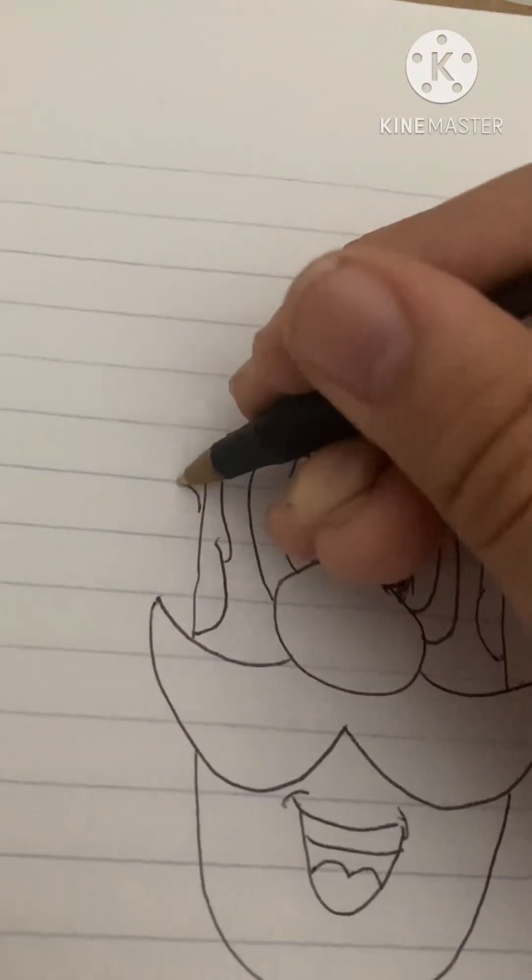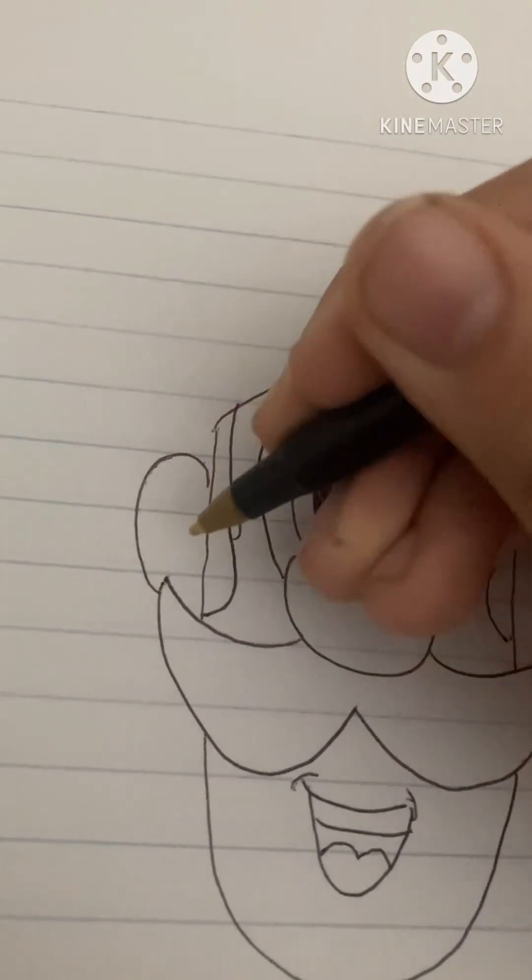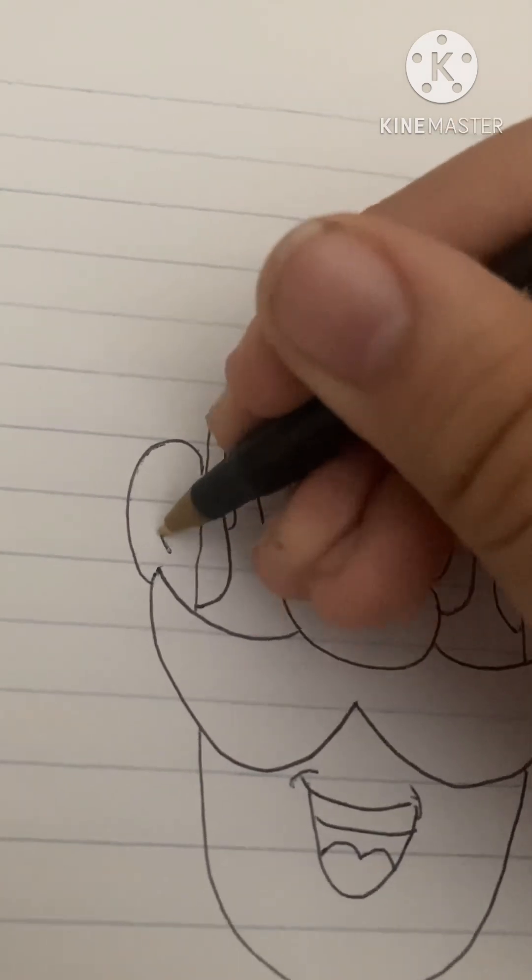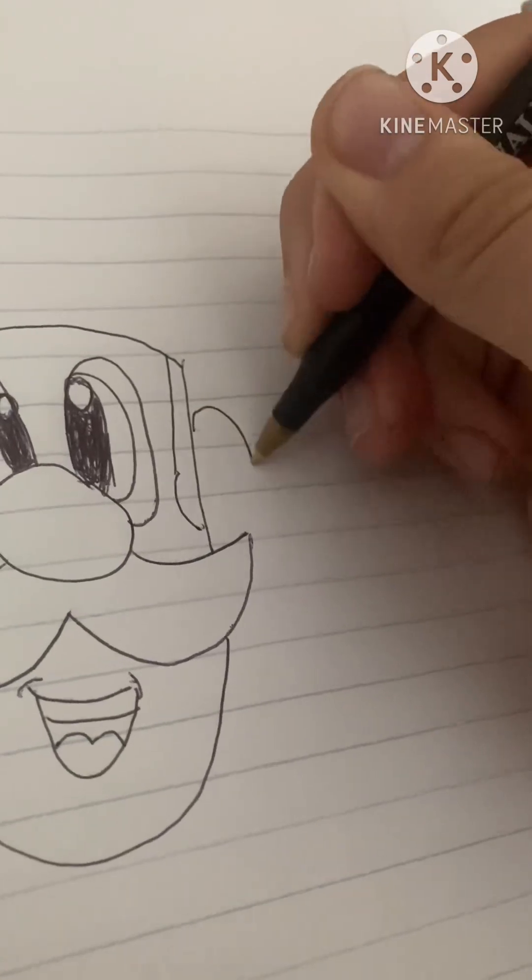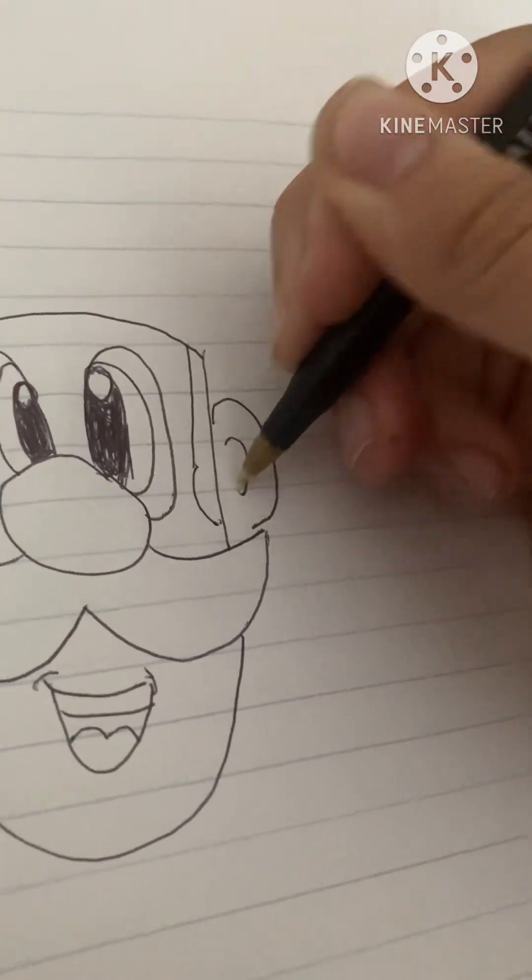Now we're gonna do his ears. So we're gonna do a circle, then you're gonna do an F. And now you're gonna do the same thing here, but instead of an F you're gonna do a backwards F.